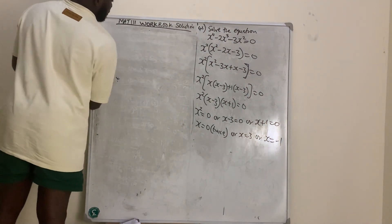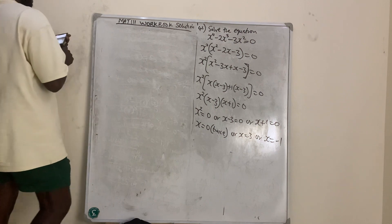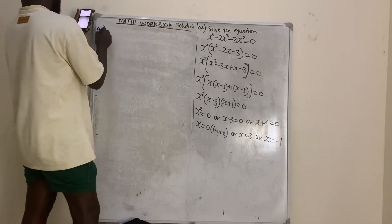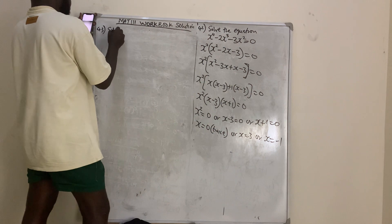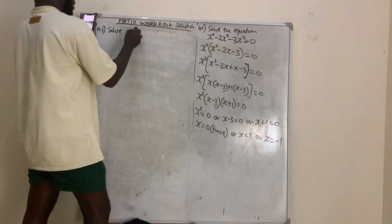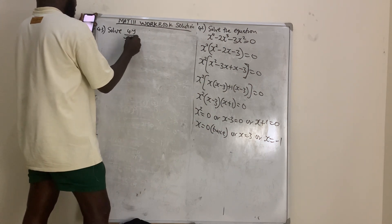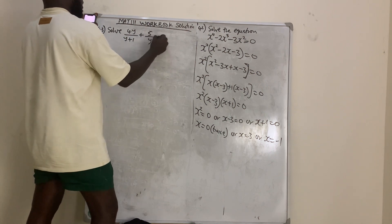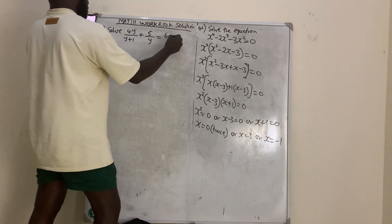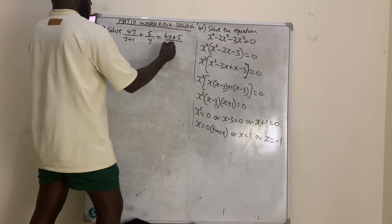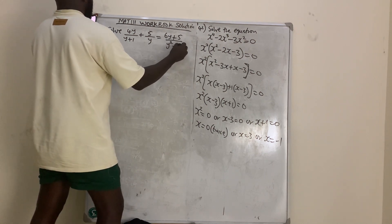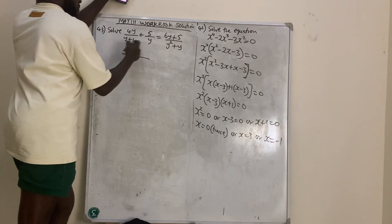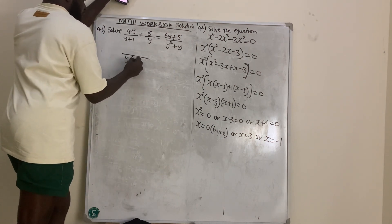We move to question number 43: solve y over (y plus 1) plus 5 over y equals (6y plus 5) over (y squared plus y). To solve, find the LCM of the left side to bring the fractions together.